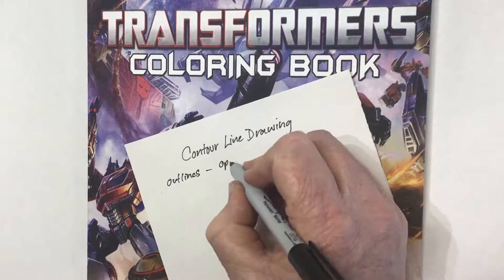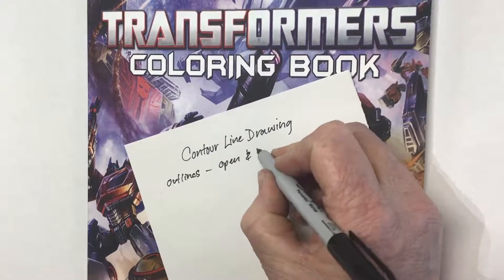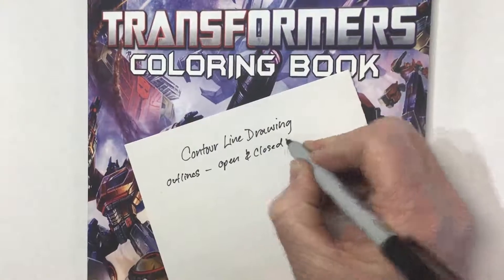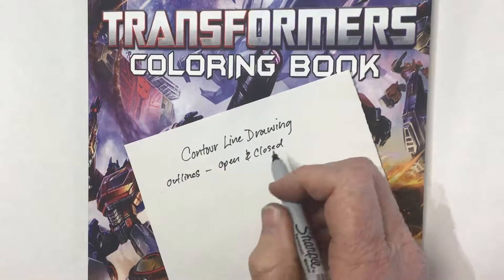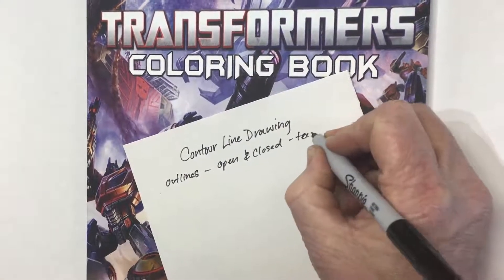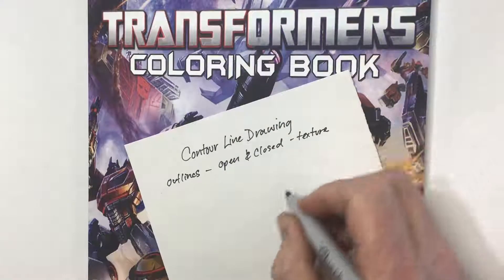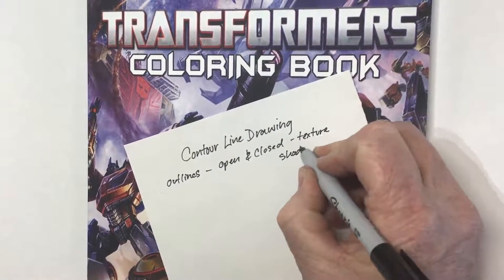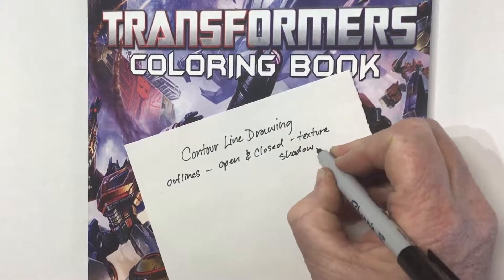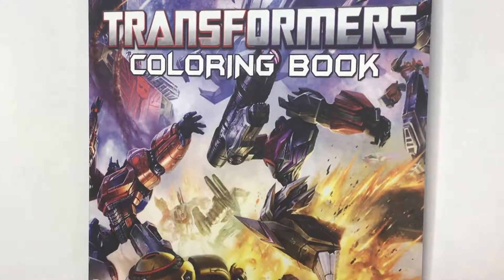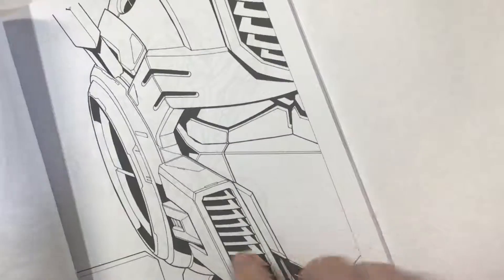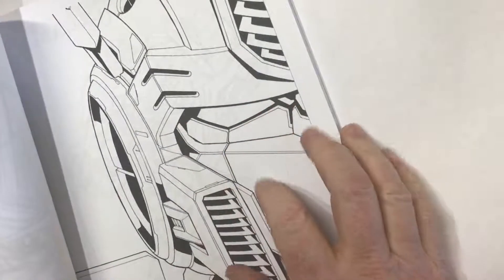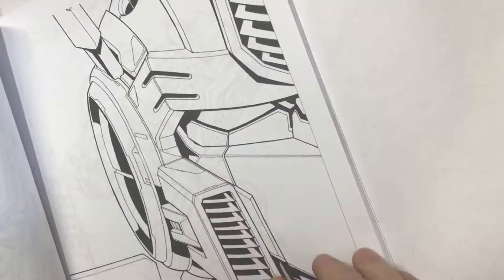Those shapes are sometimes open but also closed shapes. In contour line drawings we're only using lines that outline things, but we're also dealing with textures. How do you show texture or even shadow using only lines? I've got here one of my favorite coloring books from when I was a kid. Here's a face, so we're just using lines. Most of these are closed shapes.